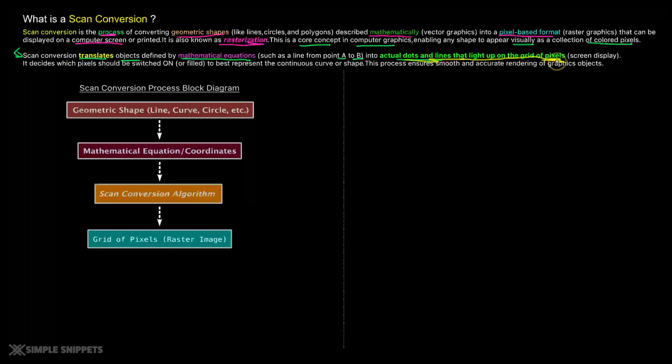To portray something on that screen using these pixels, you need something called a scan conversion. So this scan conversion basically decides which pixel should be switched on, what should be the intensity of light, what should be its color and how it should be represented to form a particular shape or a curve on the screen. So this process ensures smooth and accurate rendering of graphic objects on your screen. So that is the whole concept of scan conversion.